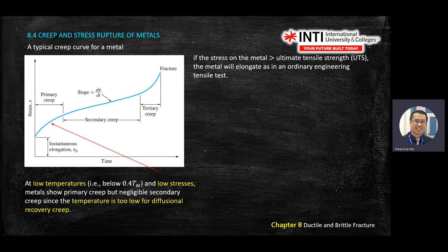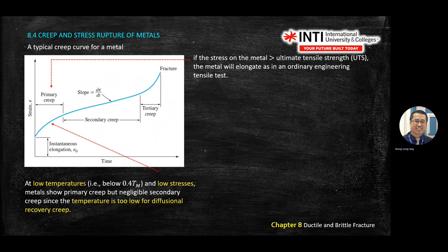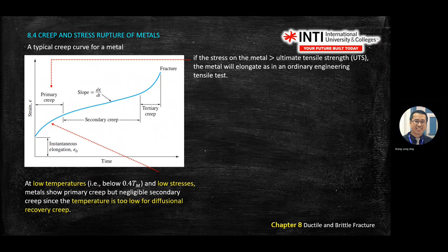At low temperature — below 0.4 of Tm (melting point) — and low stress, you have primary creep. You can ignore secondary creep since the temperature is too low. If the stress on the metal is more than the ultimate tensile strength, the metal will become longer and longer in an ordinary engineering tensile test. So primary creep happens at low temperature and low stress.